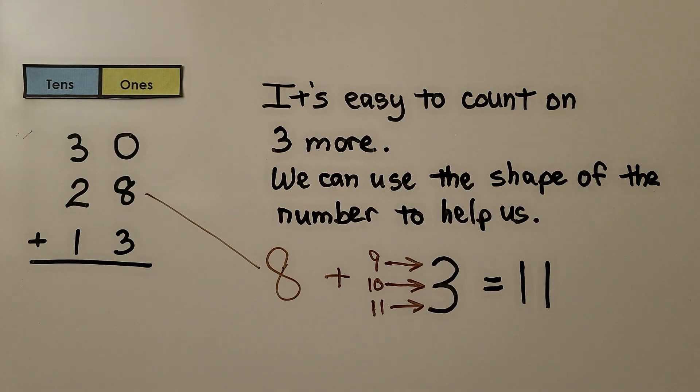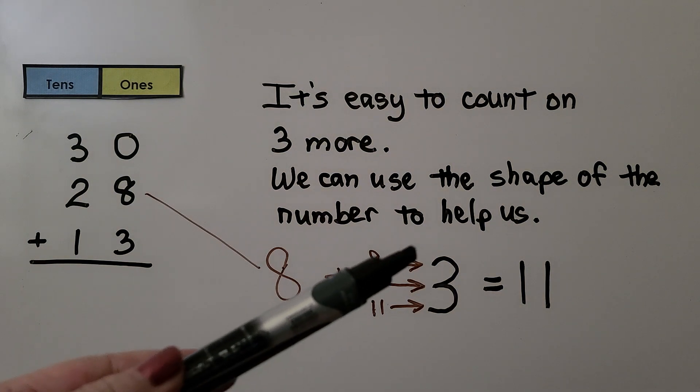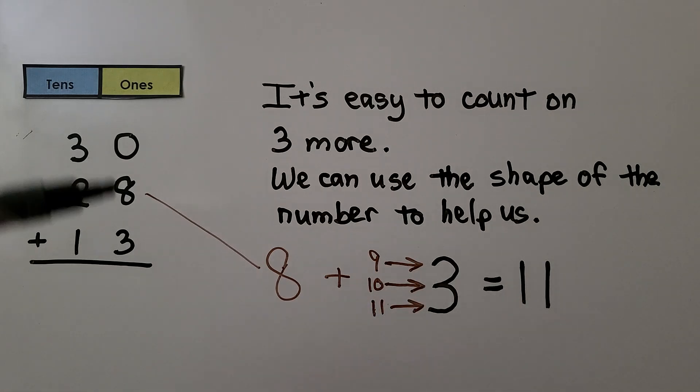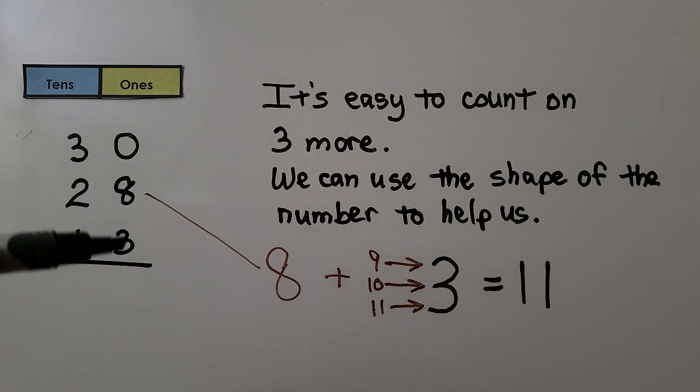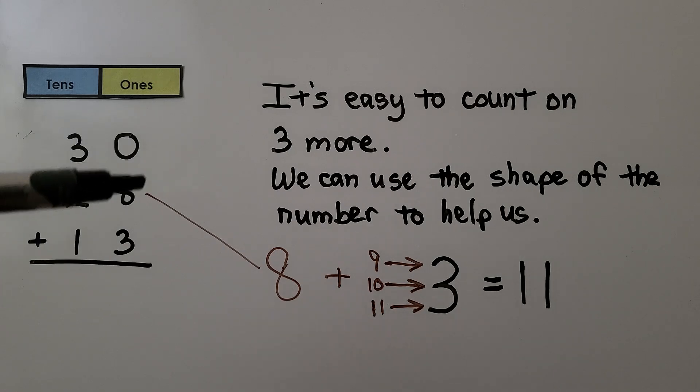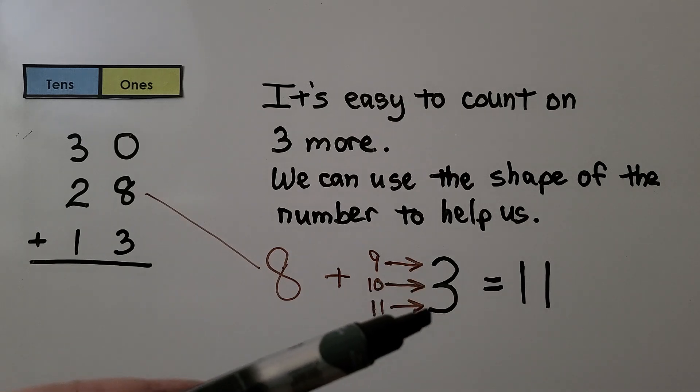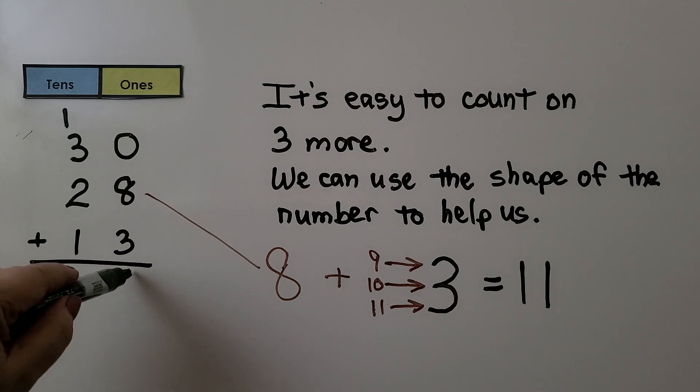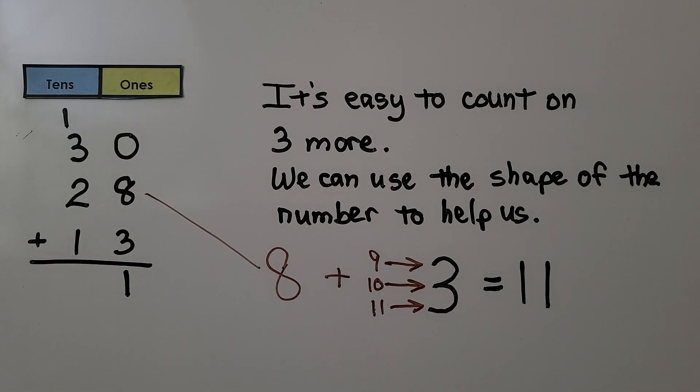It's easy to count on 3 more. We can use the shape of the number to help us. The number 3 has 3 little points. When we're adding 0 plus 8 plus 3 in the ones column, 0 plus 8 is 8. So now we have 8, 9, 10, 11. We regroup the 10 into the tens place and put the 1 in the ones place. Now we add the tens. 3 tens plus 1 ten is 4 tens, 5, 6 tens, 7 tens. It's equal to 71.